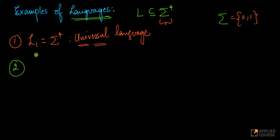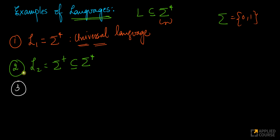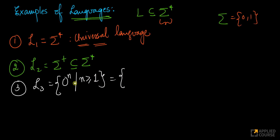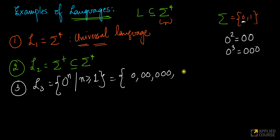I could have L2 which equals sigma plus — this is also a language because it's a subset of sigma star. For another example, language L3 could be defined as 0^n such that n is greater than or equal to 1. Here 0 is a symbol in the alphabet. This is a valid language and a subset of sigma star. What language is it? It is the language of strings with one or more zeros and no ones.